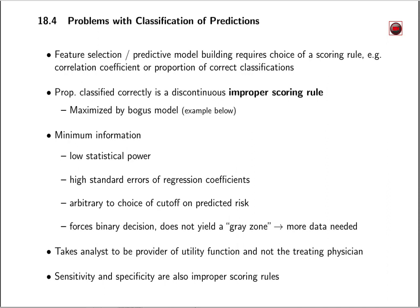Importantly, classification is really a type of decision and it has a hidden utility function. Analysts who do classification are assuming the role of the utility provider, which is really quite presumptuous, because utilities, losses, or cost functions should be provided by — say, in health care — the patient.